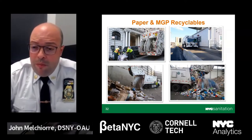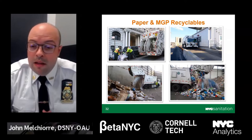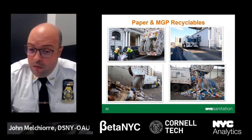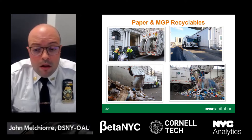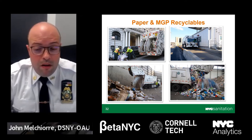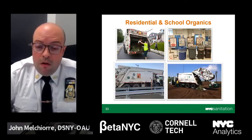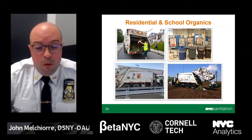DSNY collects paper and MGP recyclables set out at the curb by residents, sometimes in dual-bin trucks as shown in the photo at the top left. DSNY then takes the material to a specific recycling vendor associated with the district where the materials were collected. Similar to refuse trucks, recycling trucks scale in, dump their load, and scale out so accurate tonnage can be recorded. Sometimes these dual-bin trucks may go to two separate vendors based on the commodities collected. These dual-bin trucks are also the primary trucks used to collect material from schools.